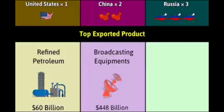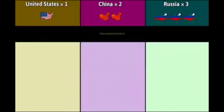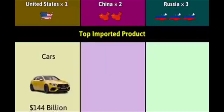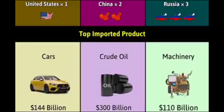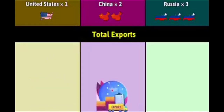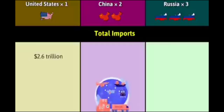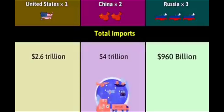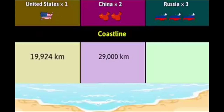Top exported product: refined petroleum 60 billion dollars, broadcasting equipment 448 billion dollars, crude oil 246 billion dollars. Top imported product: cars 144 billion dollars, crude oil 300 billion dollars, machinery 110 billion dollars. Total exports: 1.35 trillion dollars, 7 trillion dollars, 1.02 trillion dollars. Total imports: 2.6 trillion dollars, 4 trillion dollars, 960 billion dollars.